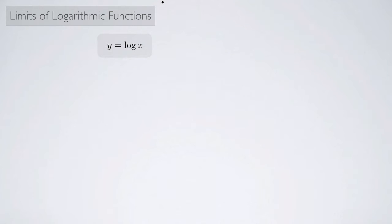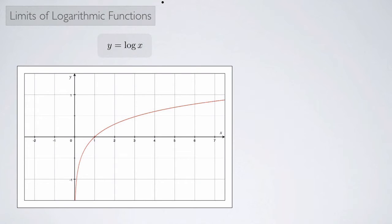Now let's look at the limits of some logarithmic functions. Your basic log function is y equals the log of x. When we don't specify a base, we assume that it's base 10. So this is y equals log base 10 of x. Here's a graph of this function, and from this graph we can deduce two basic limits.